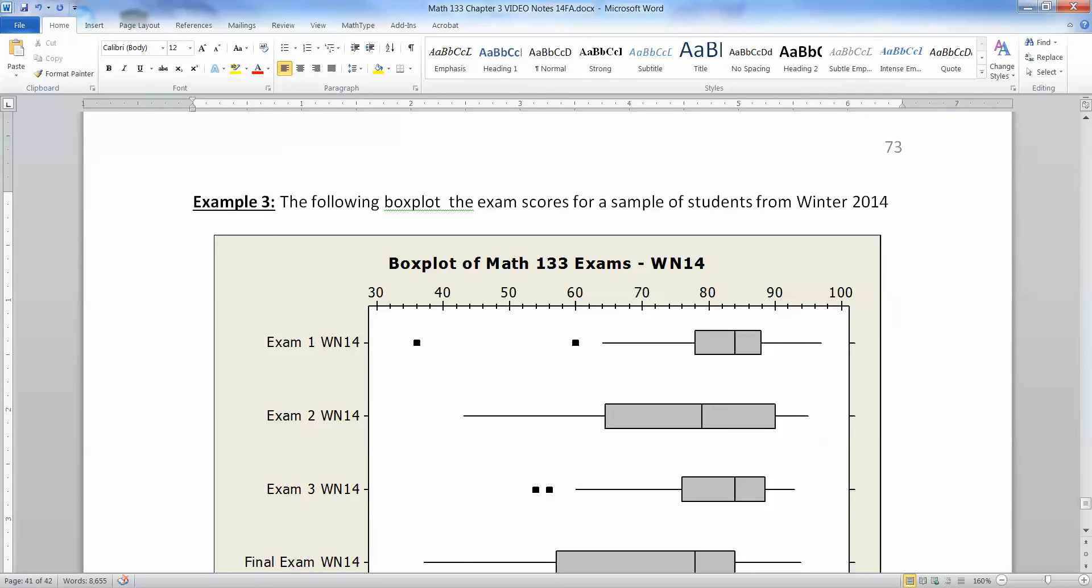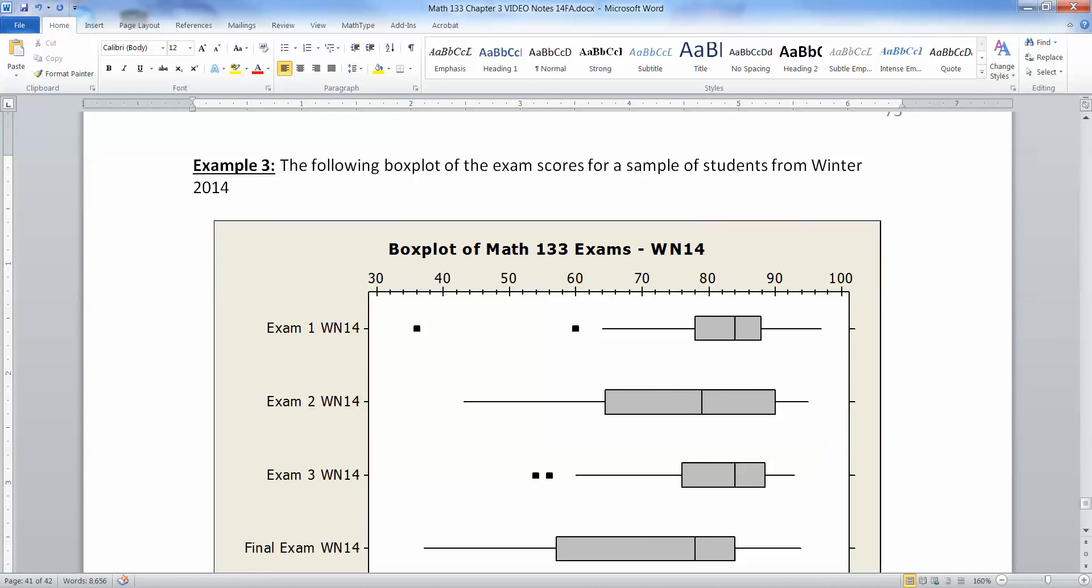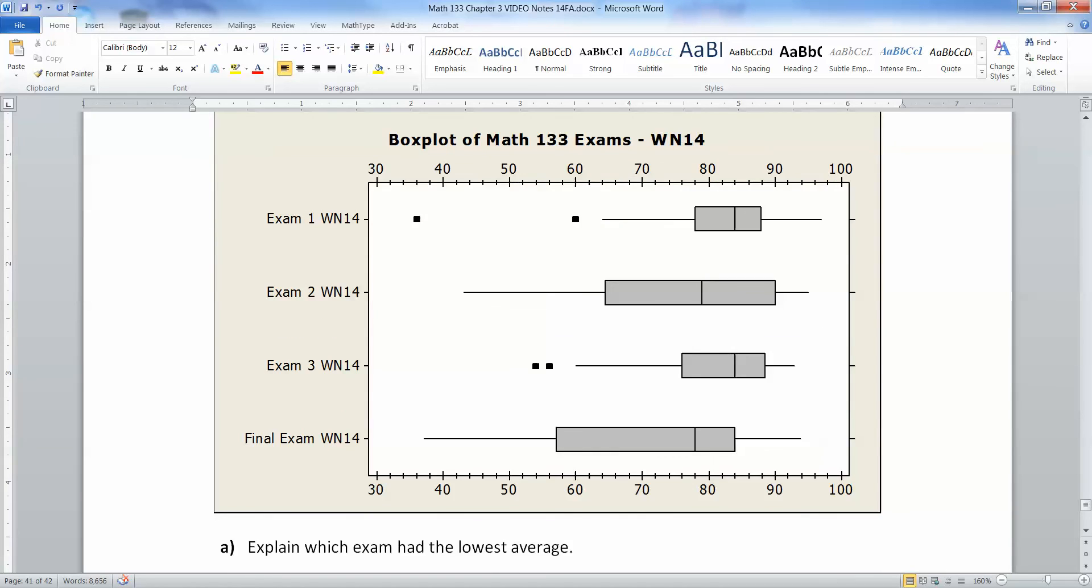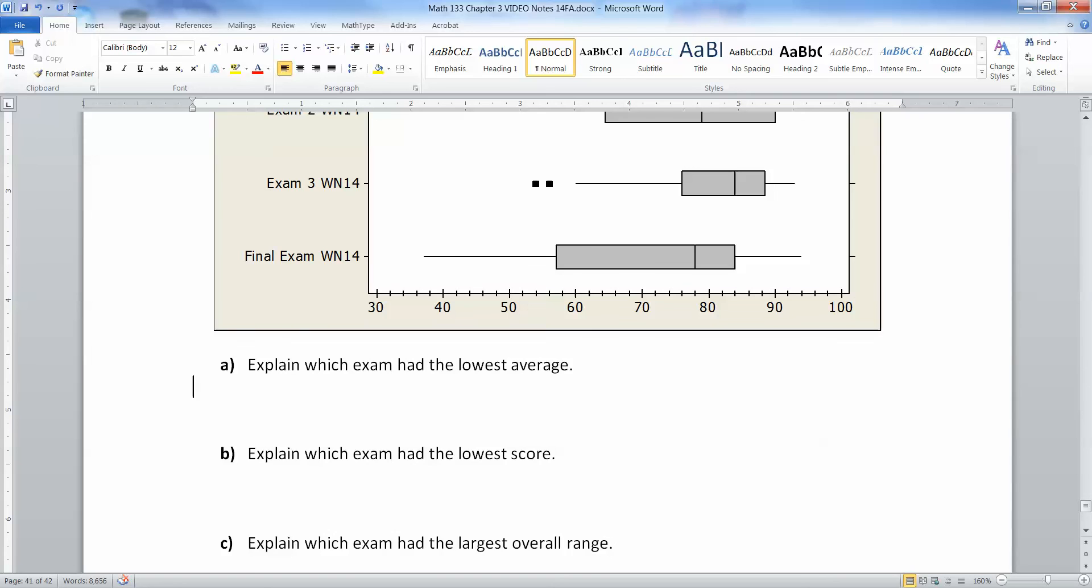So let's look at the following box plot of the exam scores for a sample of students from winter 2014. So here we have the exam one, exam two, exam three, and the final for a sample of students from winter 2014. So which exam had the lowest average? Well, the average, remember, is the median. So you want to look at the lines in there. So the lowest average was actually the final exam. It looks like it's about 78. Let me type that up. And you'll notice I'm using the scale here. There's four tick marks in there between 70 and 80. So that's got to be 72, 74, 76, 78, and then 80.